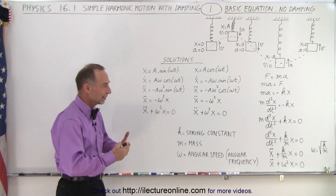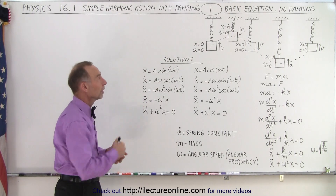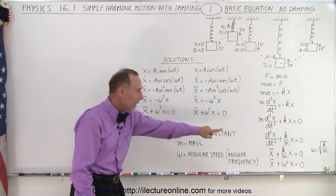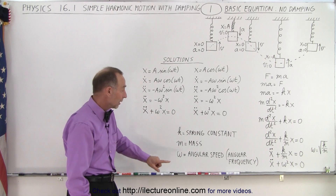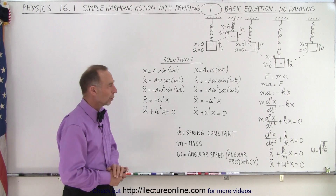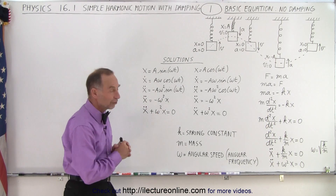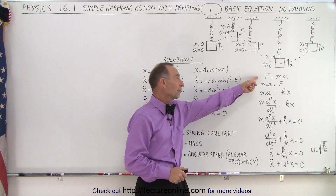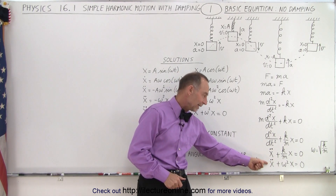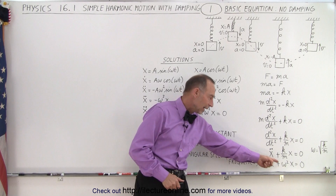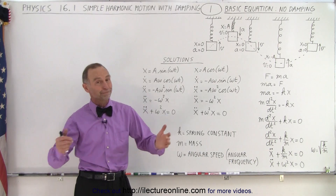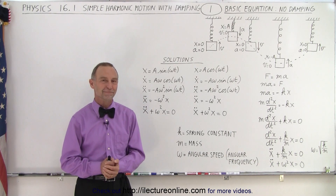That's the basic differential equation describing the oscillatory motion of an object. Remember that k is the spring constant, m is the mass, and the square root of k over m is the angular speed or angular frequency omega of the motion. Starting from f = ma, we arrive at the second-order differential equation in terms of position x, time derivatives, and omega — the angular frequency of the oscillatory motion.